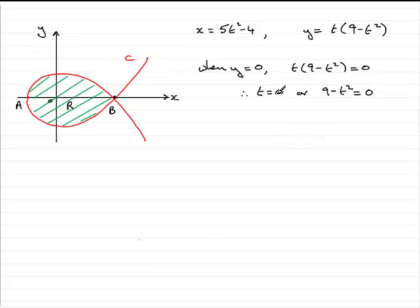So when t equals 0, let's see what we get. When t equals 0, x will equal 5 times 0, which is 0, minus 4. So x equals minus 4.